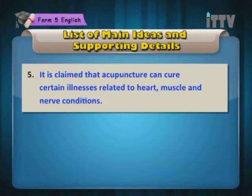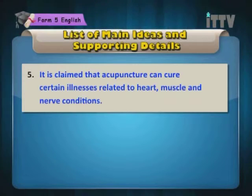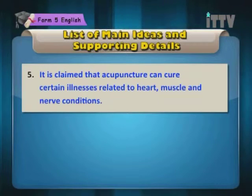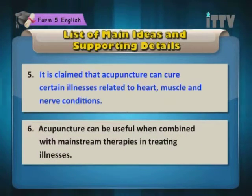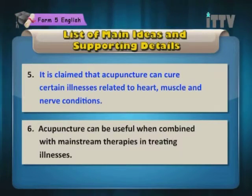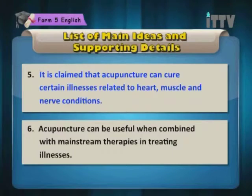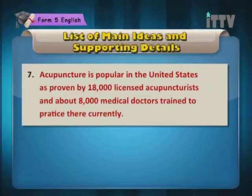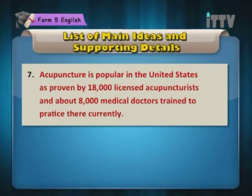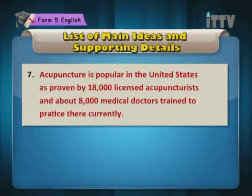The fifth sentence: It is claimed that acupuncture can cure certain illnesses related to heart, muscle and nerve conditions. The sixth sentence: Acupuncture can be useful when combined with mainstream therapies in treating illnesses. The seventh sentence: Acupuncture is popular in the United States as proven by 18,000 licensed acupuncturists and about 8,000 medical doctors trained to practice there currently.